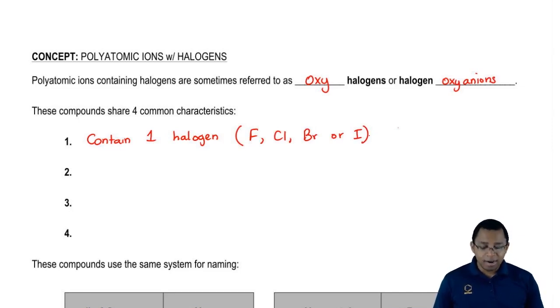The next characteristic is they contain one to four oxygens. All of these compounds have halogens and one to four oxygens.